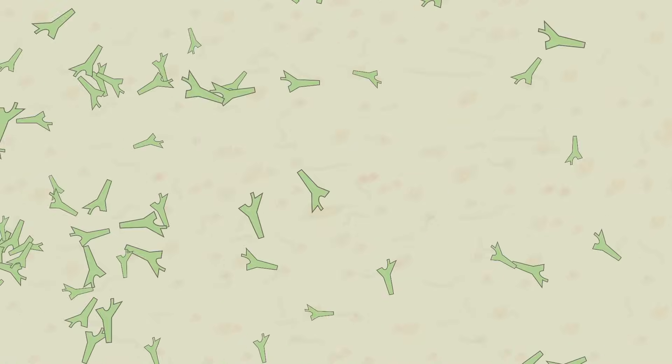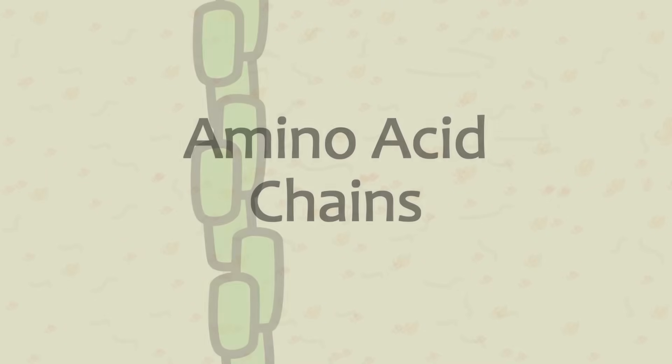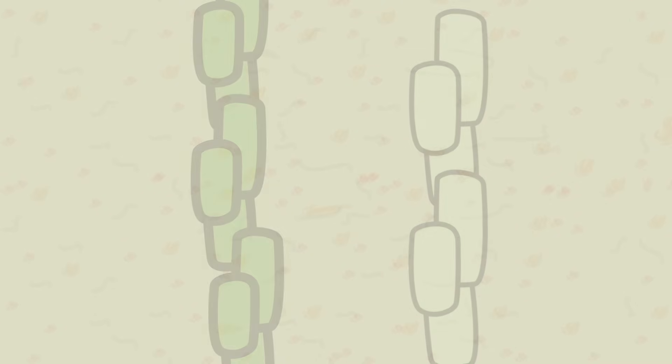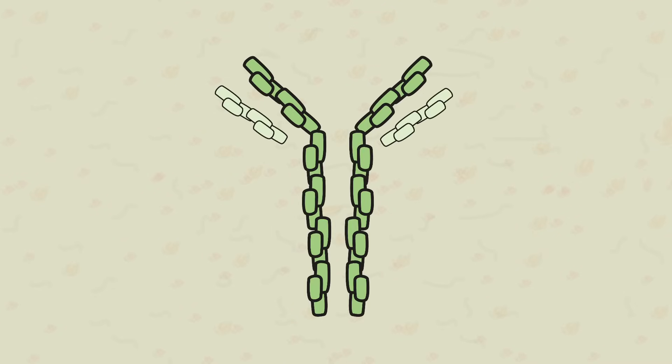Immunoglobulins are constructed from two types of amino acid chains: heavy chains and light chains. Ig molecules contain two identical strands of heavy chains and two identical strands of light chains.